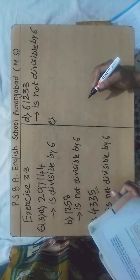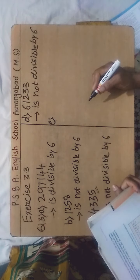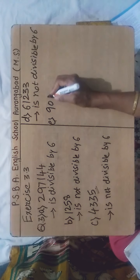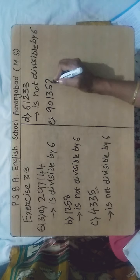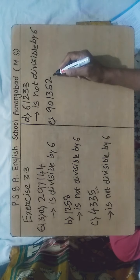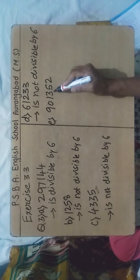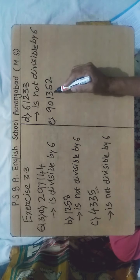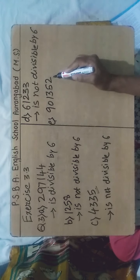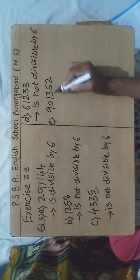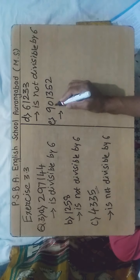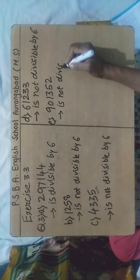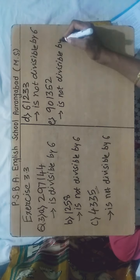Sub-question E: the number is 9,01,352. It is having 2 at its ones place. The sum of digits: 9+0+1+3+5+2 = 20, which is not divisible by 3. Therefore the above number is not divisible by 6.